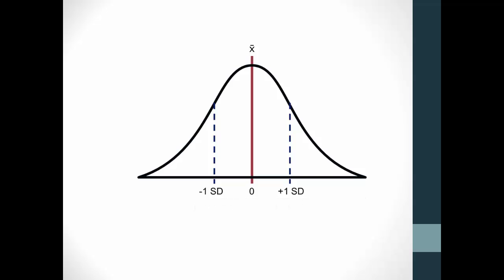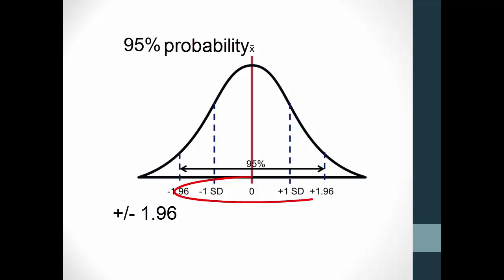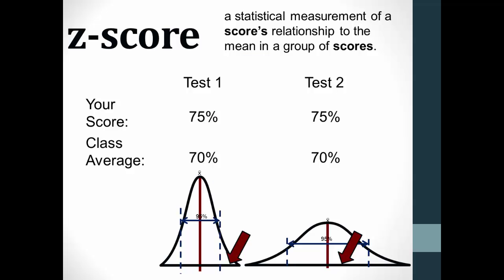A magic number often used in statistics is 95%. If you want to capture 95% of the scores in a normal distribution, the scores would be within slightly less than two standard deviations of the mean, or more specifically, plus or minus 1.96 standard deviations, meaning that there is a 95% probability that a particular score is within 1.96 standard deviations of the mean.